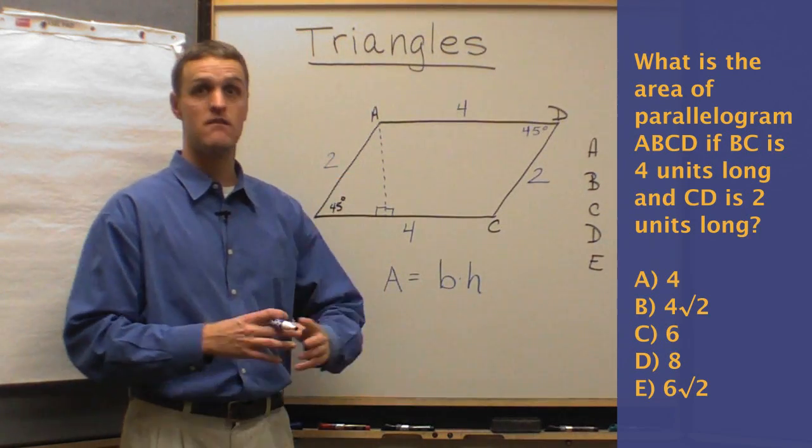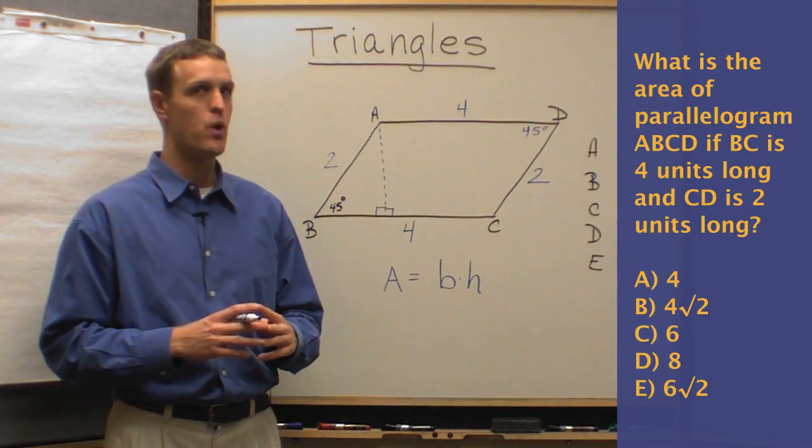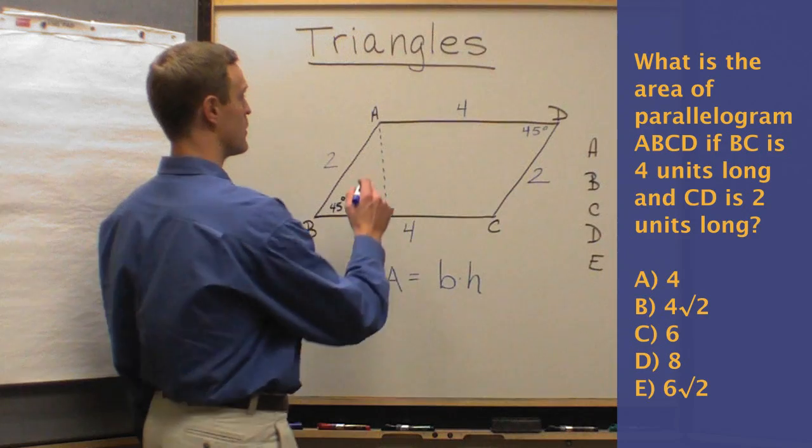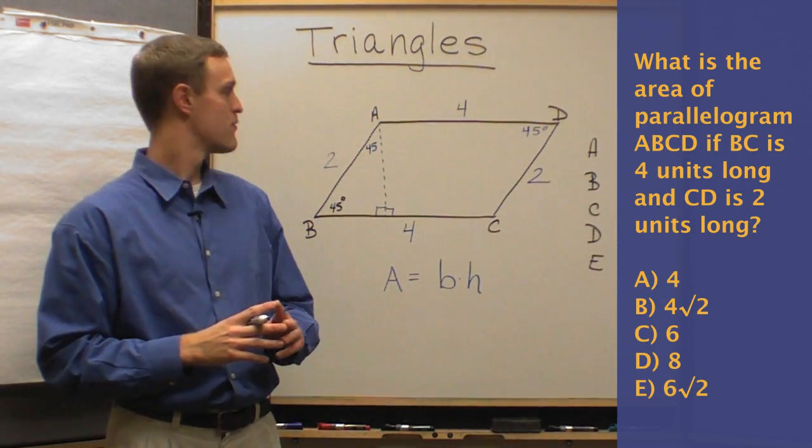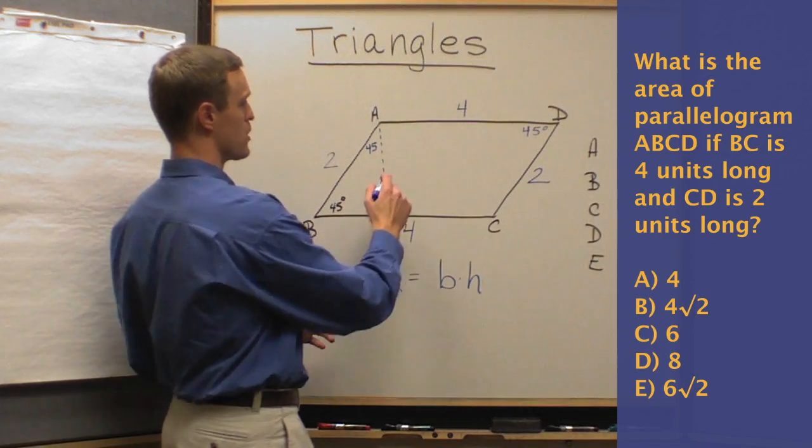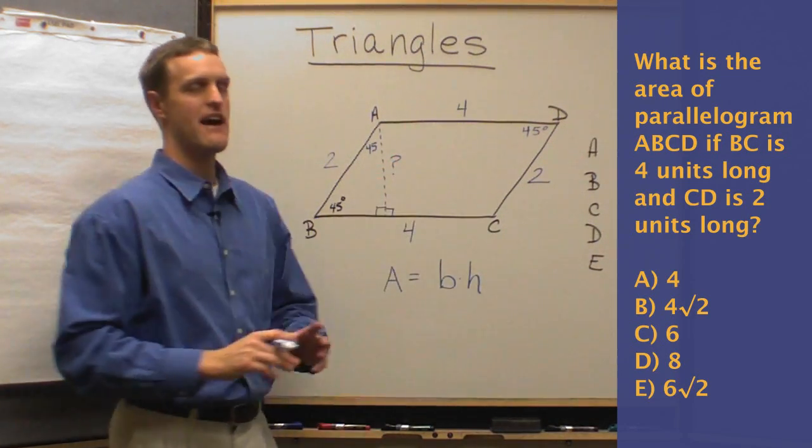And if the angles of a triangle summed to 180, that means there's only 45 degrees left. So there we go. 45 degrees. 45-45-90. And we're supposed to solve for that altitude.